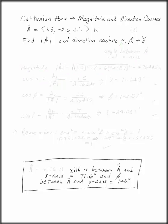Convert vector A, which is given in Cartesian form in three dimensions, to magnitude and direction cosines.